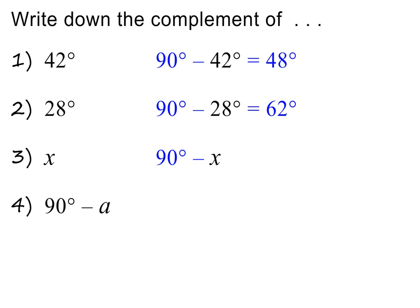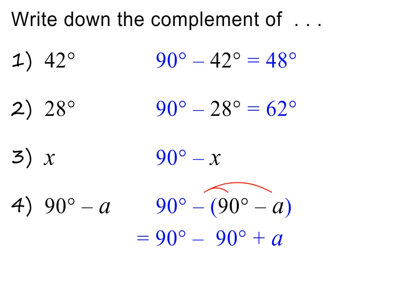What do you think the complement of 90 degrees minus A will be? As before, we subtract the given angle from 90 degrees. I use brackets in this step to show that we are subtracting the whole given angle. Next, we need to multiply the minus into the bracket. This is equal to 90 degrees minus 90 degrees plus A. The complement is therefore A. Please pause to check my working.